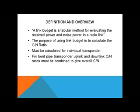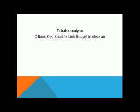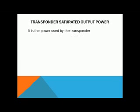For band transponders, uplink and downlink C/N ratios must be combined to give an overall C/N ratio. For analysis, a C-band geostationary satellite link is considered in clear air.